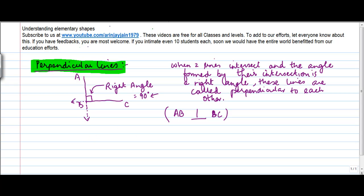So a perpendicular line is a line which hits the other line at a right angle, which is nothing but 90 degrees.